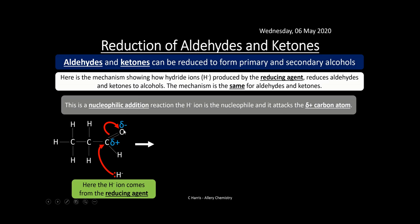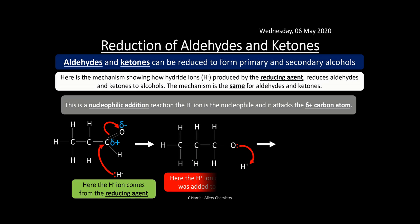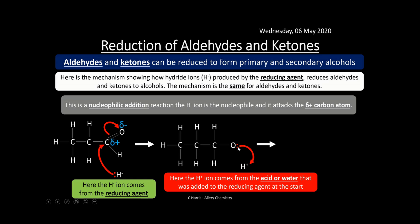The lone pair of electrons from H⁻ go into that delta-positive carbon, which breaks the C=O double bond — the electrons from that double bond jump onto the oxygen. Remember from Year 1 chemistry: curly arrows must show the direction of electron travel — from the lone pair into the carbon, breaking the double bond, then onto the oxygen. We form an intermediate with a lone pair on the oxygen, which then attacks an H⁺ from the acid or water added to the reducing agent, giving our final product — a primary alcohol when starting from an aldehyde. The mechanism is the same for ketones, which form secondary alcohols.